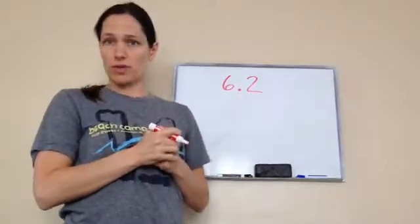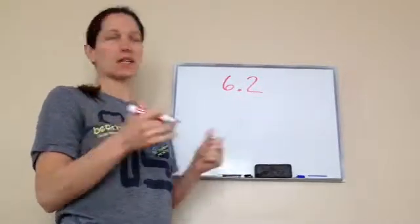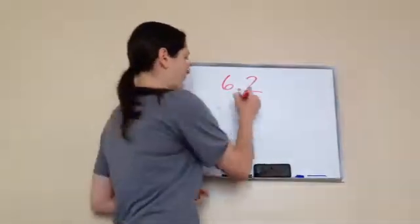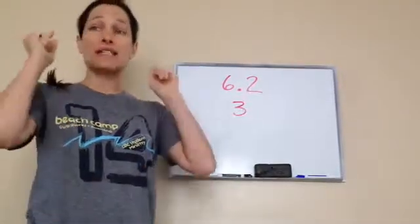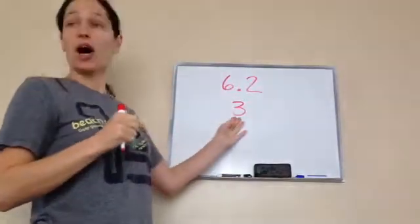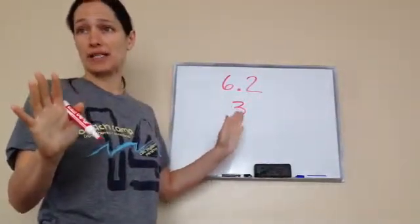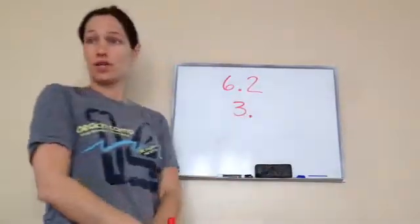That's a decimal number, and how do we know it's not money? Because it doesn't have the dollar sign. Now, what if I just wrote the number three? There's a rule that you always need to remember when you're working with math. Whenever you see a whole number three, there's always a decimal, even if you can't see it. And the decimal is always after the number.